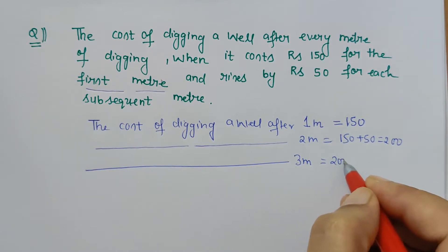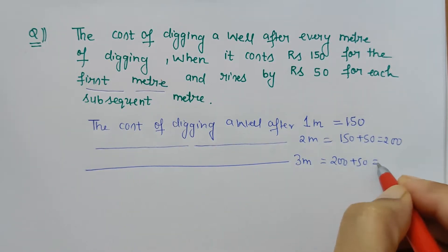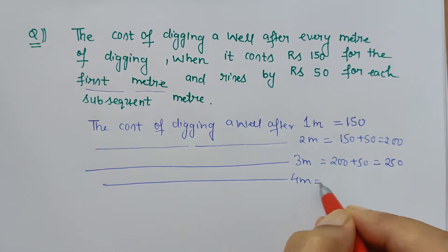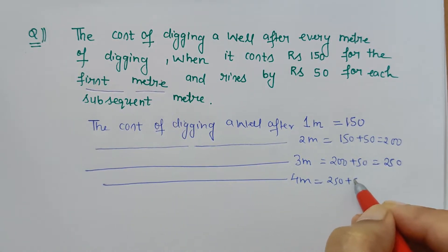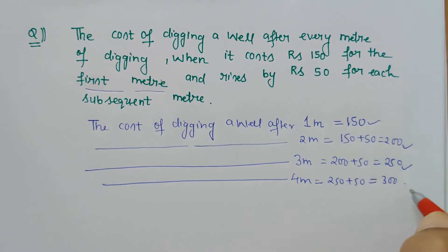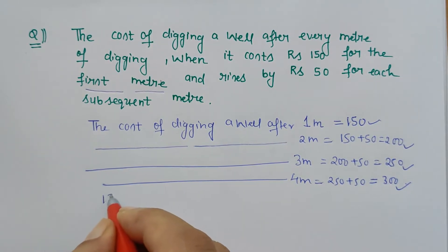And so on, for four meters, 250 plus 50, isn't it? It is increasing by rupees 50, so 300. Now when you check the subsequent meters' cost, what it forms is 150, 200, 250, 300 and so on.